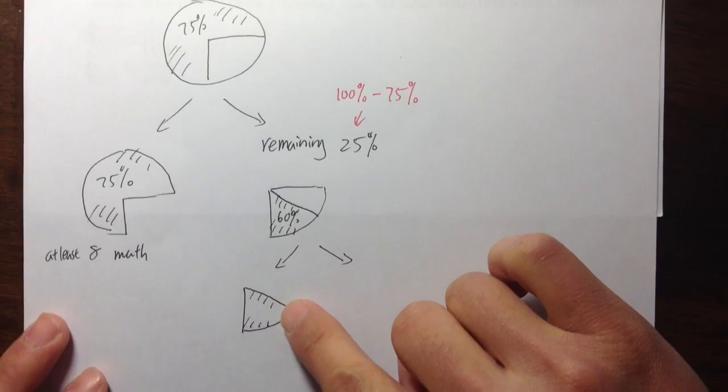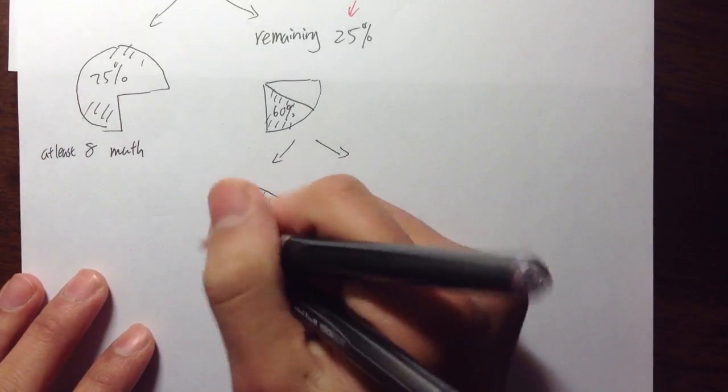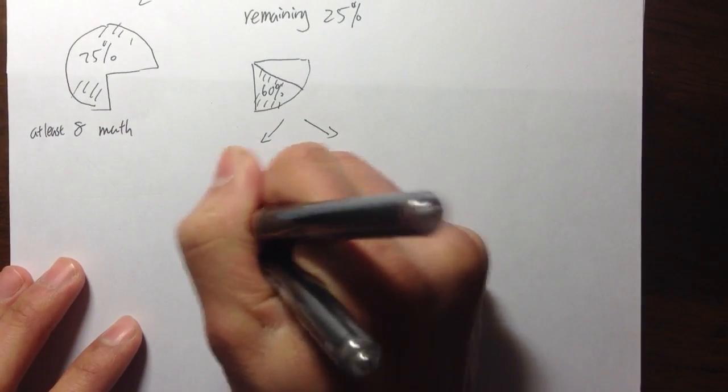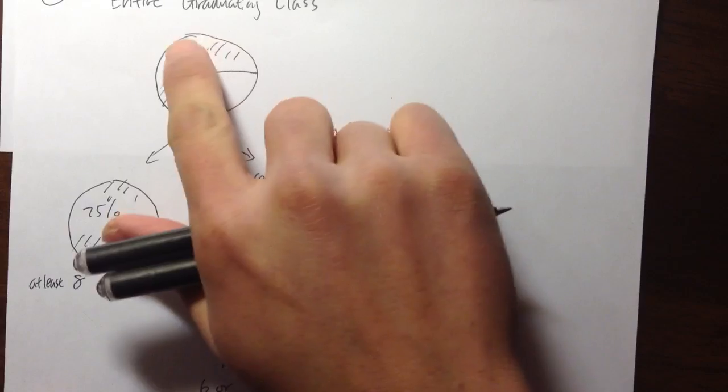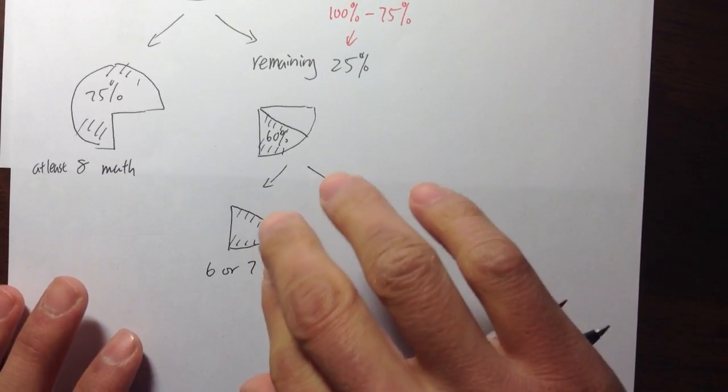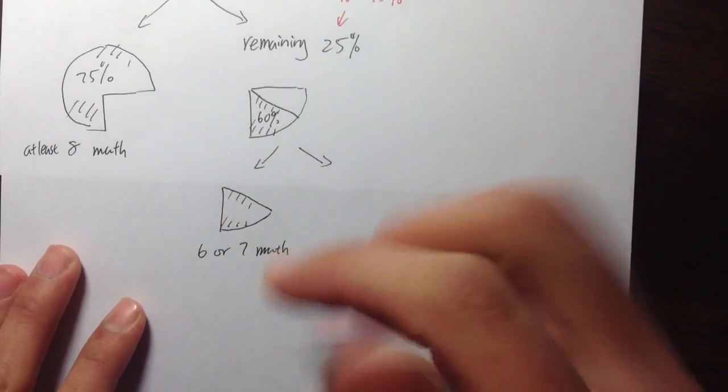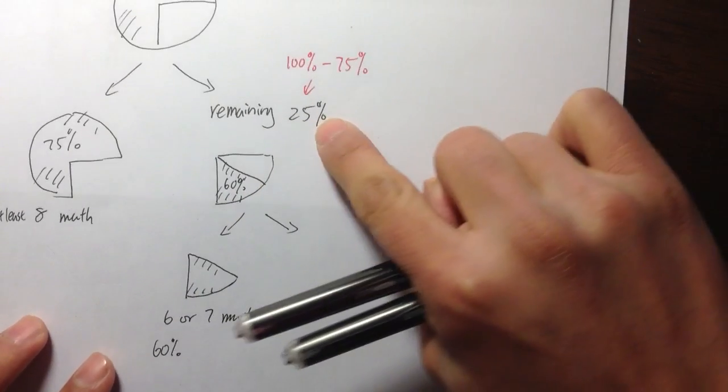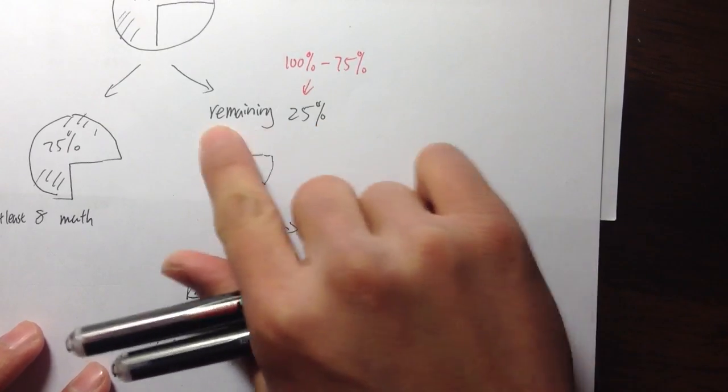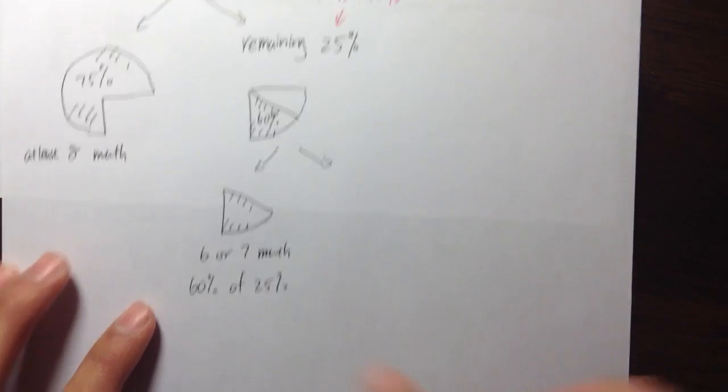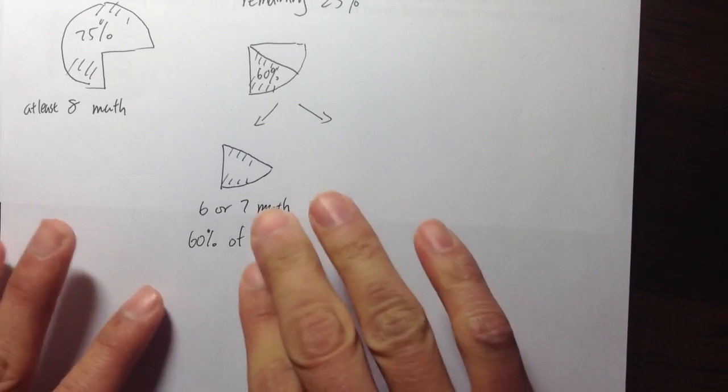So these people, 60% of these people right here, it says they take six or seven math courses. So these people, let me write it down, six or seven math courses. And what percentage of the students actually took just six or seven math courses? It's not 60%. This is actually 60% of the 25%, because it's only saying 60% of the 25% of the remaining students. However, this is not what we're trying to find.